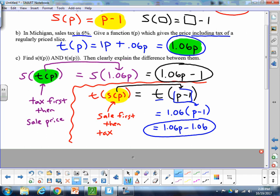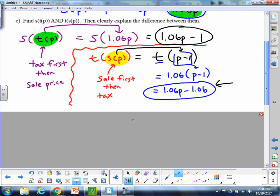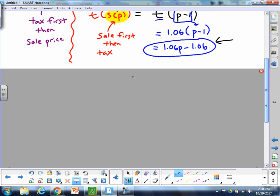So hopefully we can see, when the order is switched, if you do the tax first or do the tax second, you get a little bit of a different price. It's a little bit better for the customer this way, right, if you do the sale first, then the tax because they're subtracting 1.06.